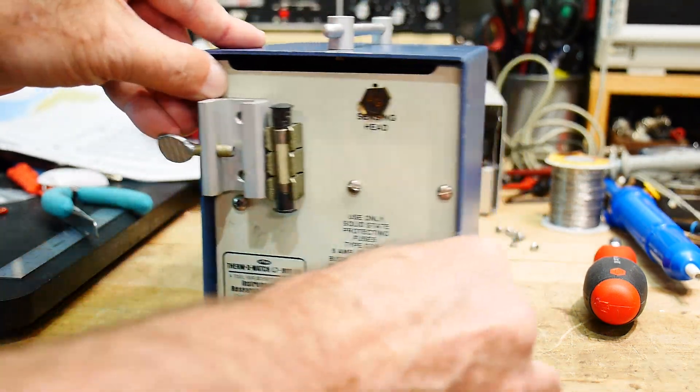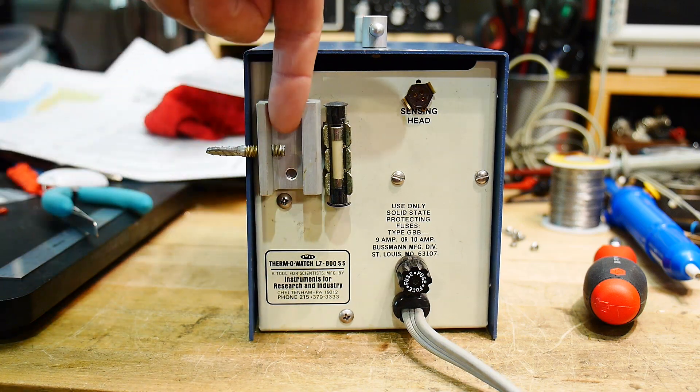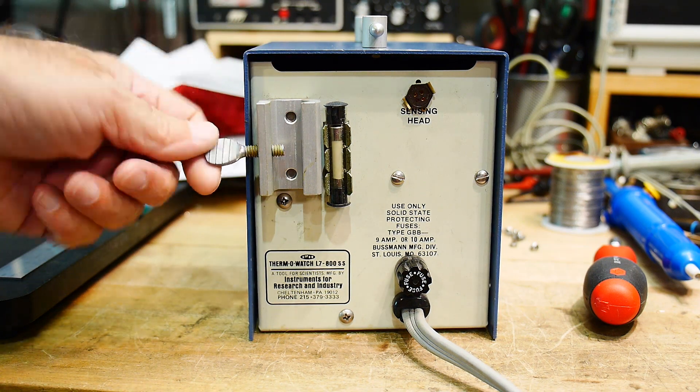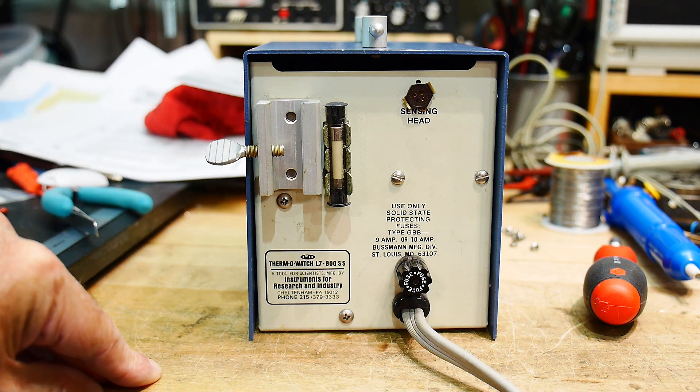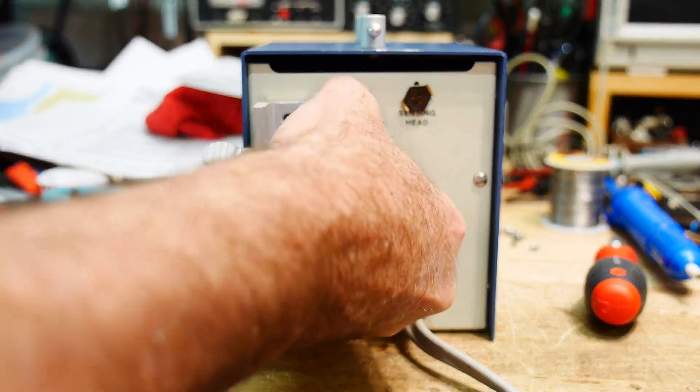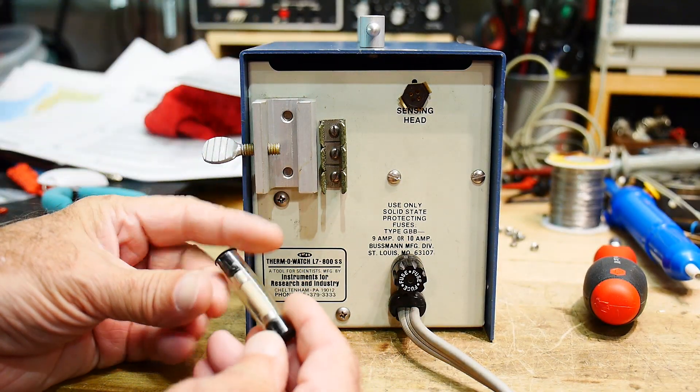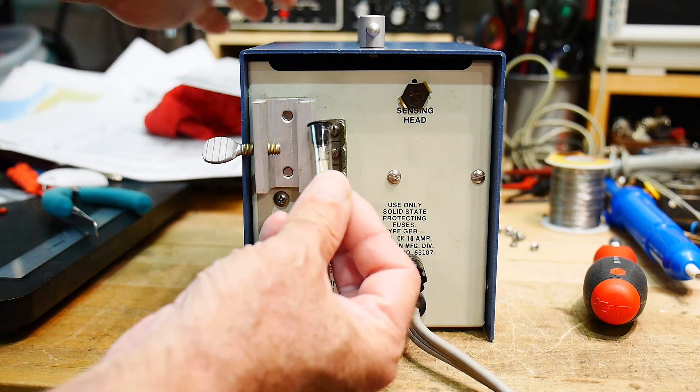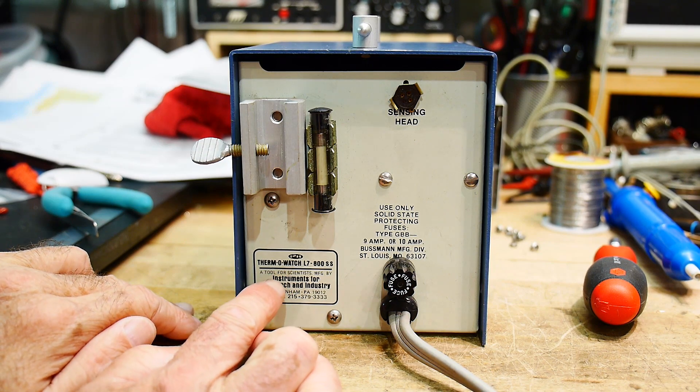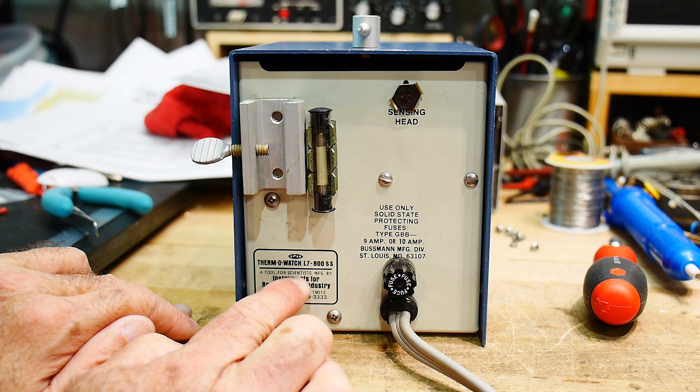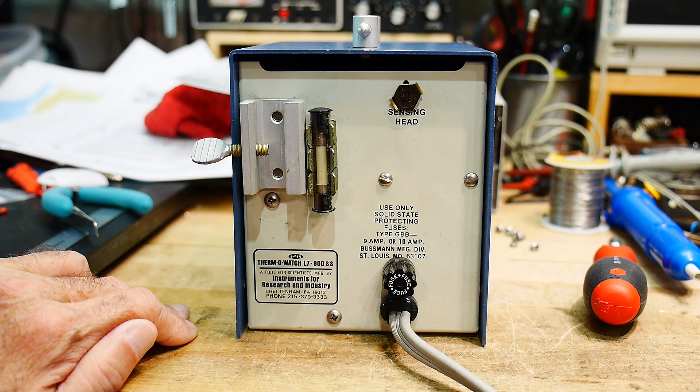So the back, the back is interesting. There's this thing that allows you to put it on a laboratory post, like for a chemistry stand type of thing. So I don't know if it goes on top or on the bottom. And then there's this weird little thing here, which at first glance is kind of bizarre. But all it is is a little plastic tube with an extra fuse in it. So here's the fuse and here's the replacement fuse, so they'll just be like, here you go. Oh, I didn't read the back here. Tool for scientists, that's me, manufactured by instruments for research industry.